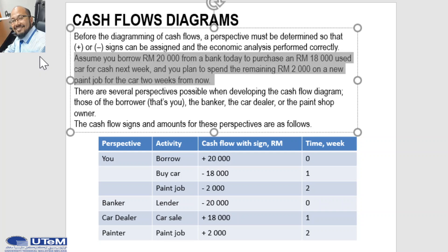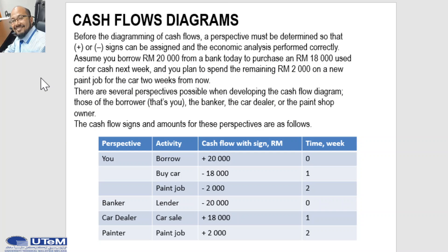Assume you borrowed 20,000 from a bank today to purchase an 18,000 used car for cash next week, and you plan to spend the remaining 2,000 on a paint job for the car two weeks from now. The time scale is weekly. There are several perspectives possible: the borrower, the banker, the car dealer, or the paint shop owner.